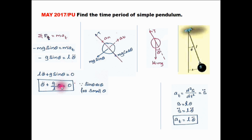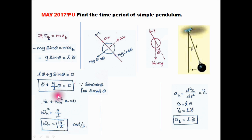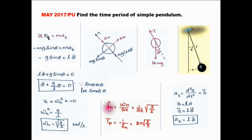Now compare this equation with the equation of simple harmonic motion. By comparing, we get omega_n squared equals g/L, hence omega_n equals root of g/L. Substituting this omega_n value into the linear frequency equation gives the linear frequency. And the time period of the simple pendulum is 2π times root of L/g. This is the answer for this question.